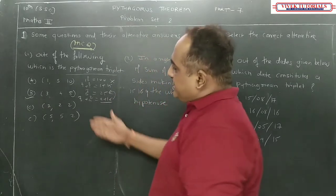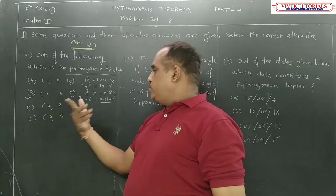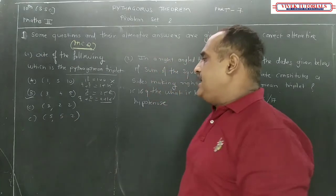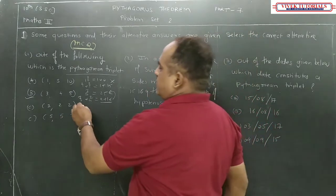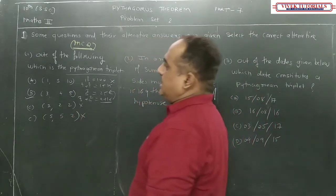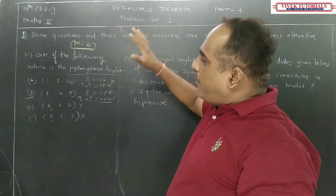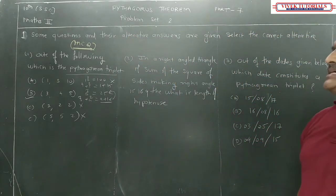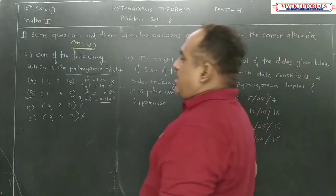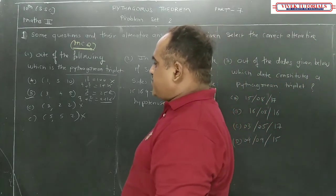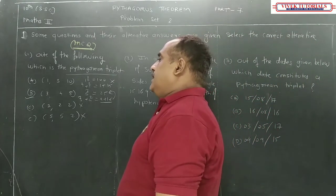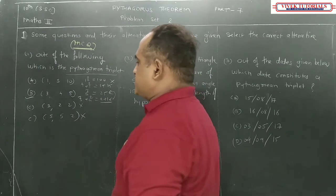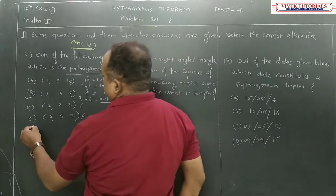Here, the largest number is not clearly the largest, like (2,2,2) — no one is the largest. 5 square equal to 5 square plus 2 is also not possible. So you must know the meaning of a Pythagorean triplet: the square of the larger number equals the sum of the squares of the other two numbers.